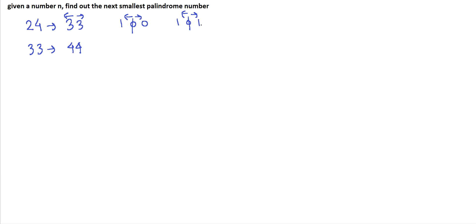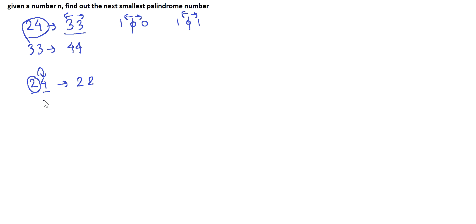Now we need to find the next smallest palindrome given an input x. In the case of 24, we can start by reversing the left side of the number and replacing the right part with that reverse to get a palindrome. In this case the palindrome will be 22. Similarly, reversing the right side and replacing the left part gives 44.